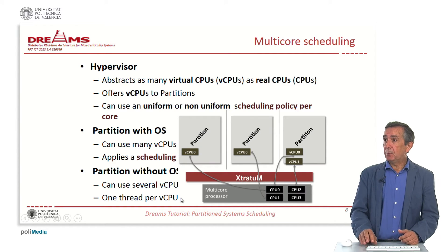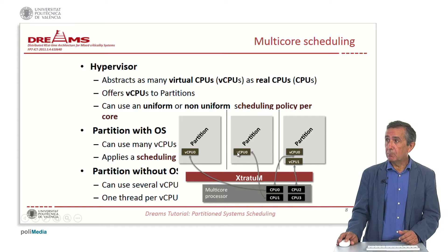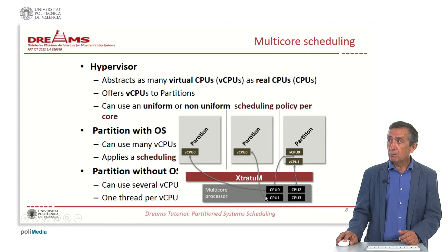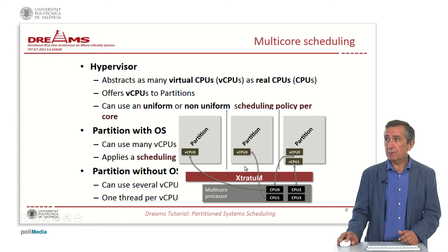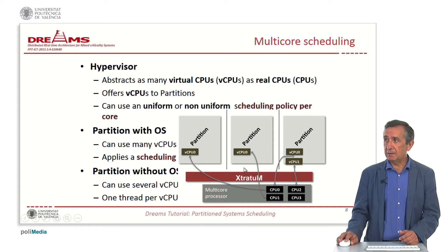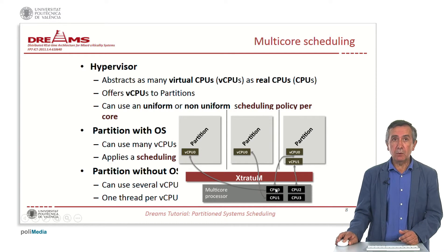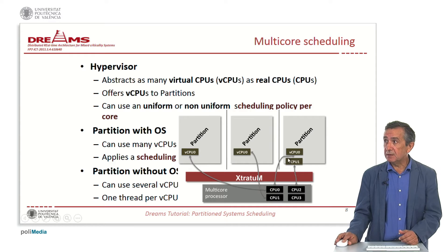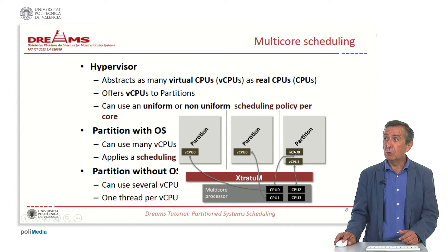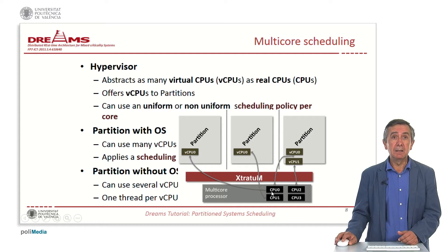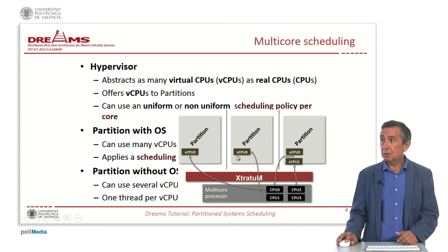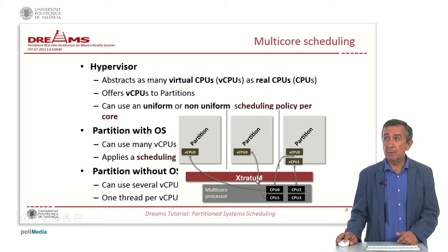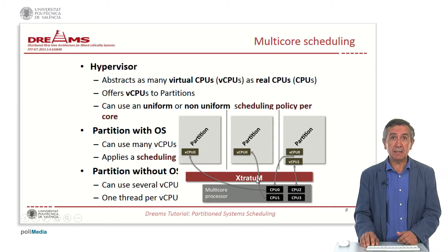As an example, we have three partitions — two monocore and one multicore — on a quad-core platform. Each partition uses virtual CPUs as the abstraction provided by the hypervisor, and the hypervisor is in charge of allocating each partition to a real core. One virtual CPU maps to one core, another virtual CPU to another core, and two virtual CPUs to two different real cores.